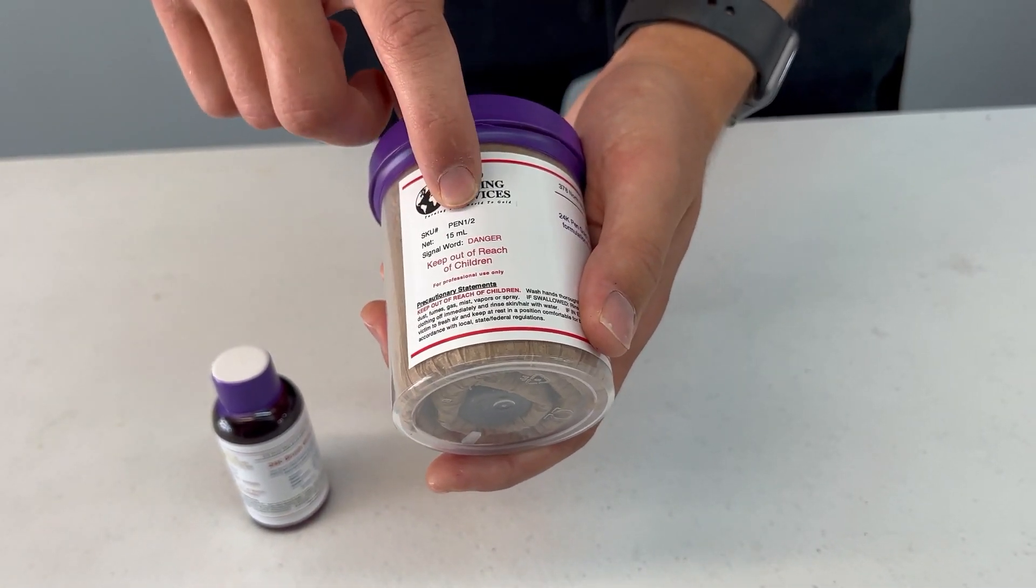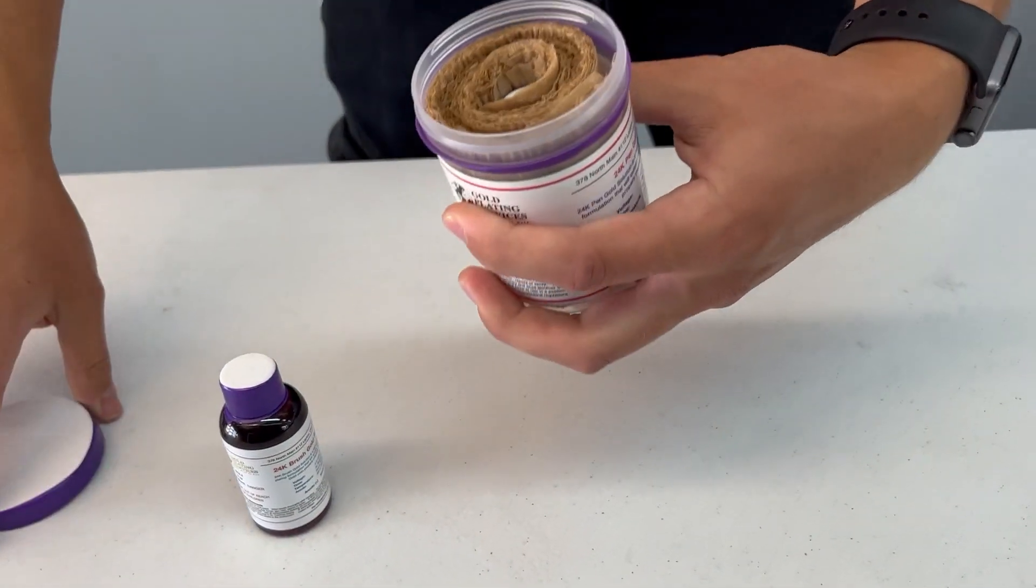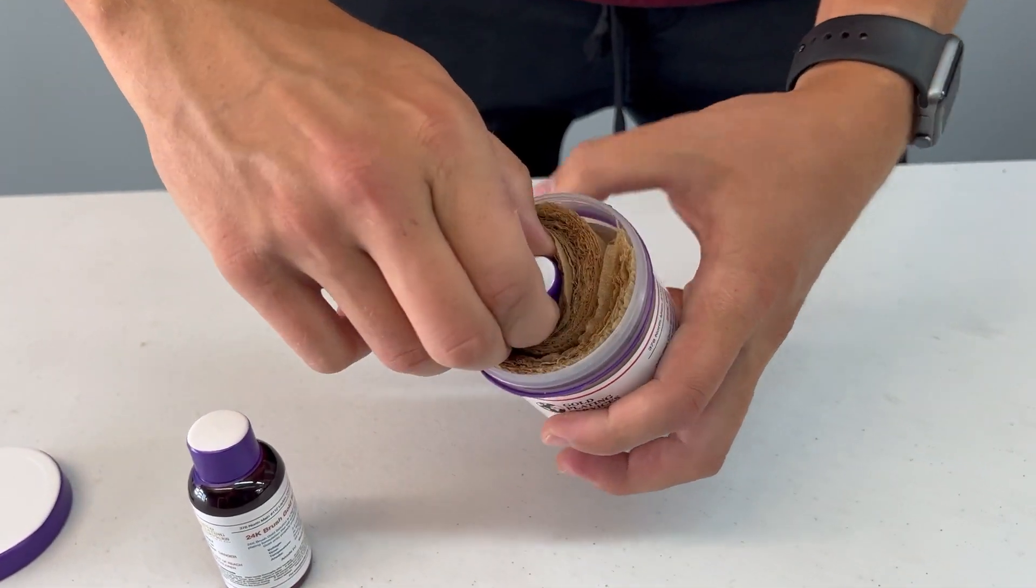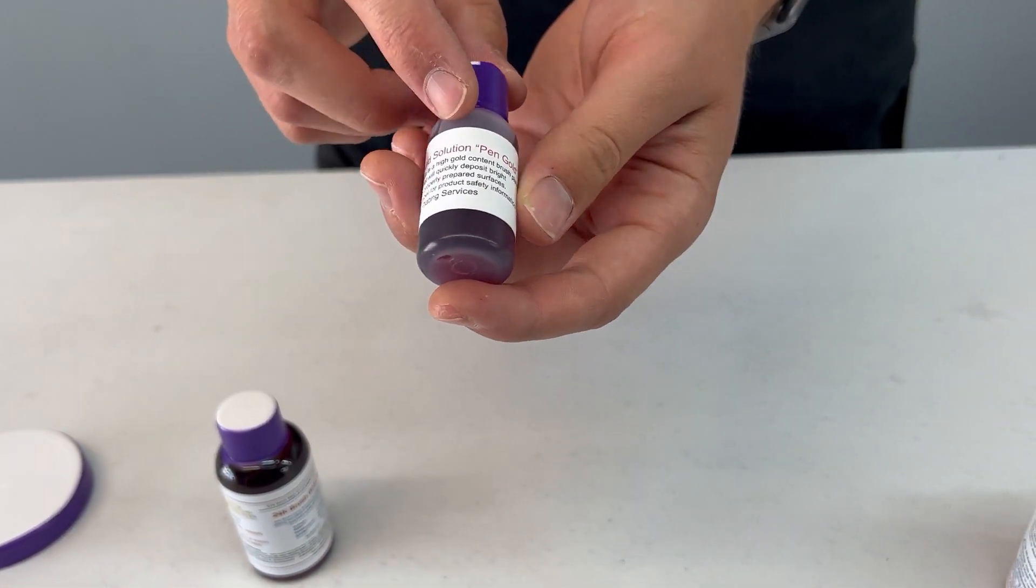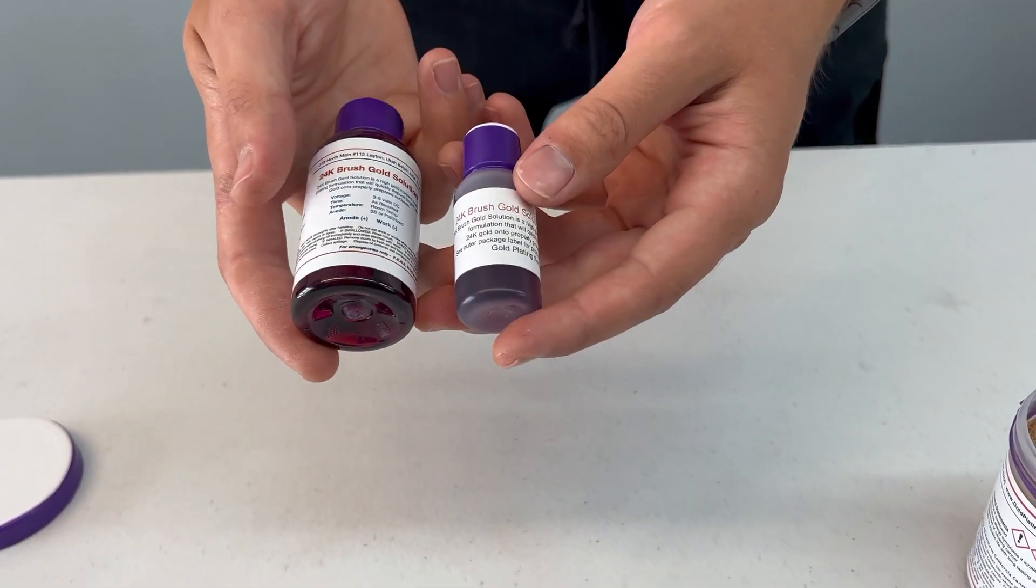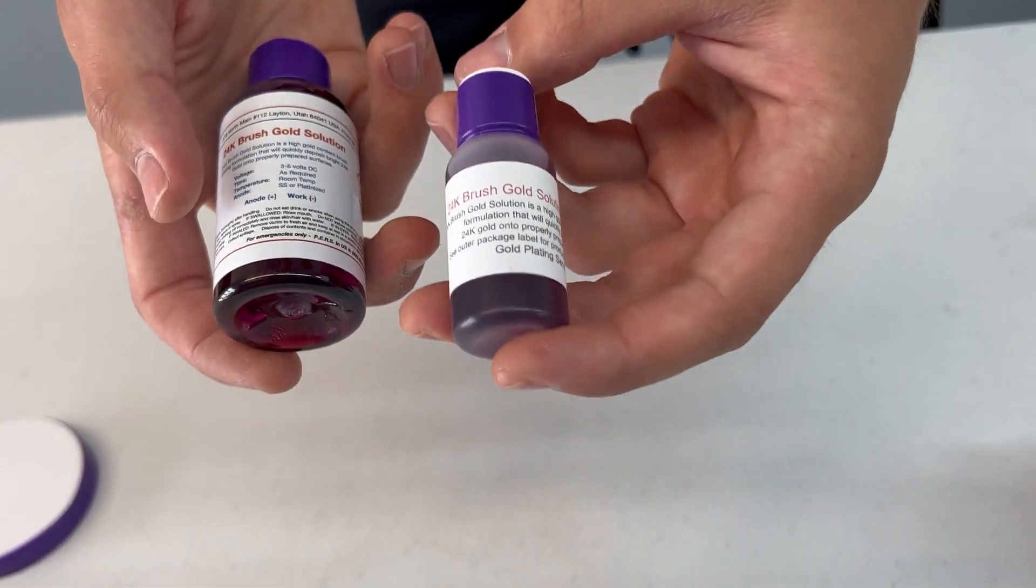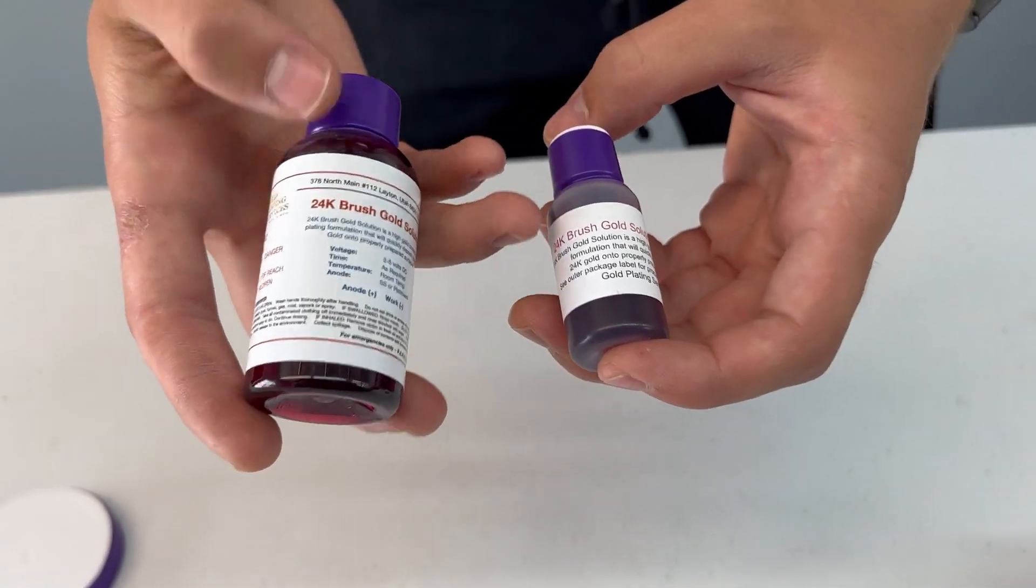Open this up and it will be packaged like this. That is our little bottle. This is a super concentrated pen gold and this is just a normal brush plating gold that we have.